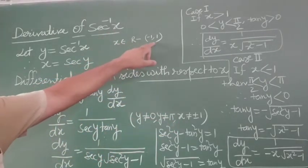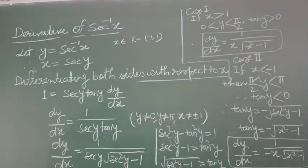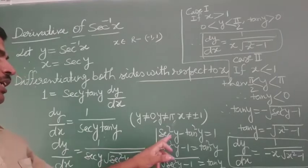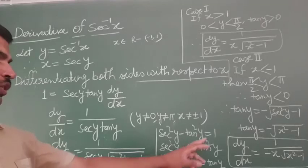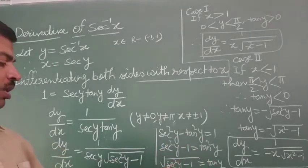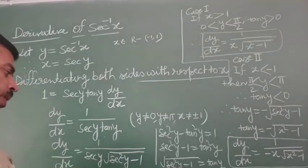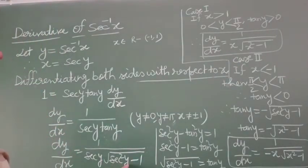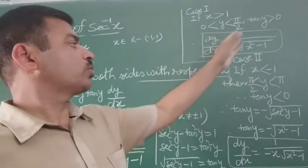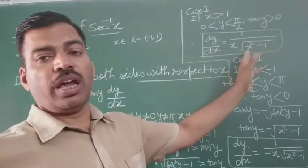x is not in the interval minus 1 to 1. We know that sec square y minus tan square y equals to 1, so sec square y minus 1 equals to tan square y, therefore tan y equals to root of (sec square y minus 1). At the place of tan y, we write root (sec square y minus 1), and at the place of sec y, we write x. So dy by dx equals to 1 upon x root (x square minus 1).